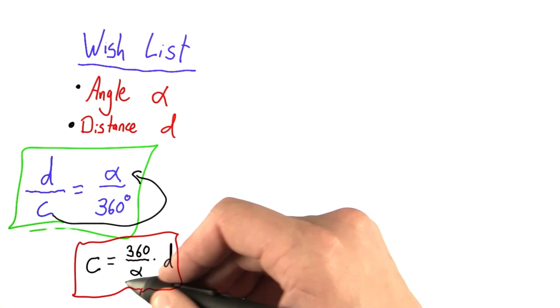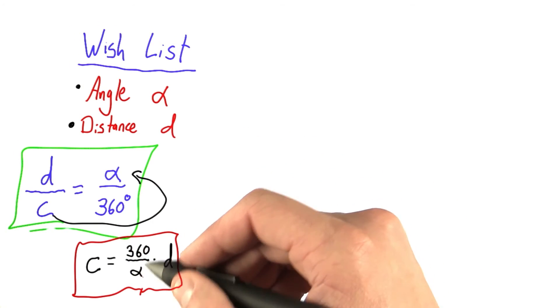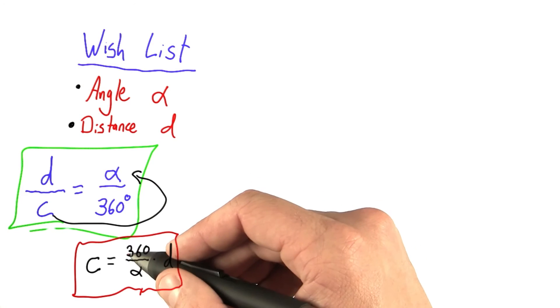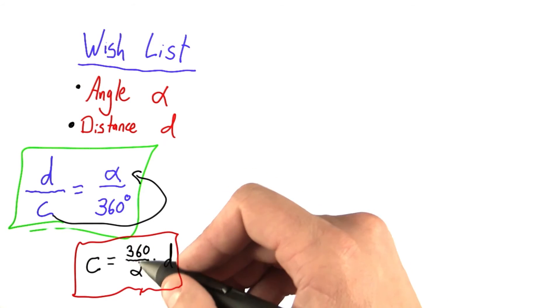I see I have here 360 over alpha. Now, these are both in degrees. When I do degrees divided by degrees, I get some unitless number.